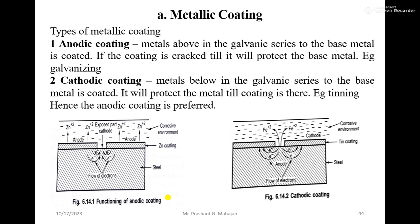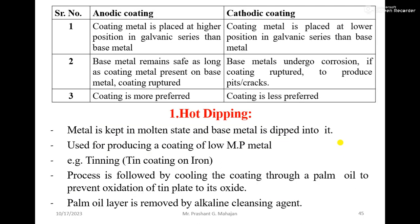Anodic coating is preferred because if there is a crack in the coating and electrolyte is present, the base metal acts as cathode and the coating metal acts as anode. So corrosion of the coating metal takes place, and the base metal is protected. Protection of the base metal continues as long as coating metal is present. In cathodic coating, once the coating is broken or ruptured and electrolyte is present, the base metal acts as anode and undergoes corrosion.